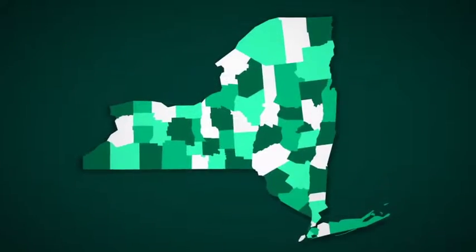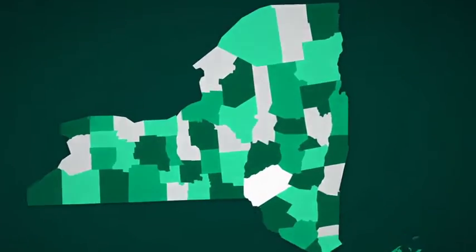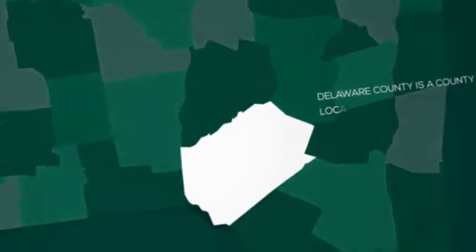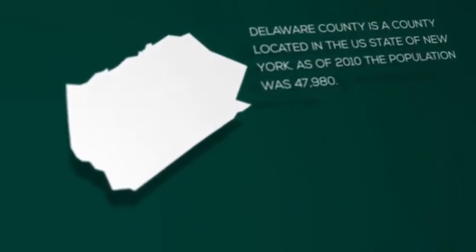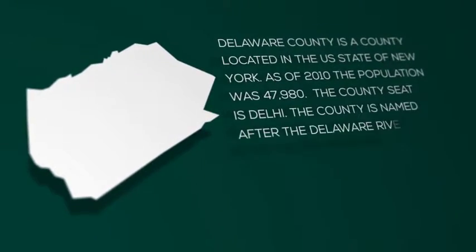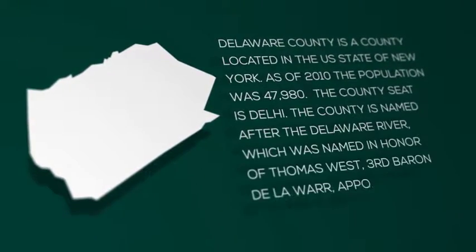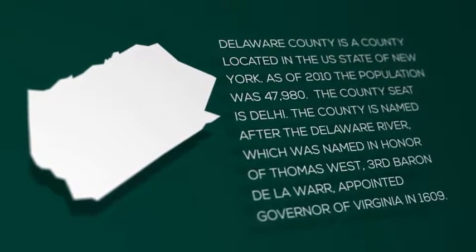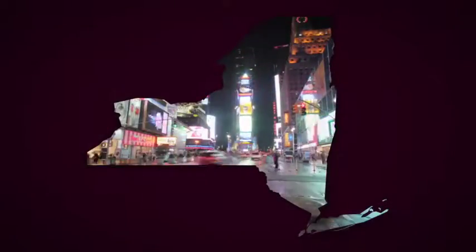Zoom in to areas of interest and hide the layers you don't need to focus on certain regions. Animate individual counties and add your own text and camera moves as required.